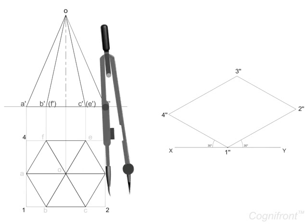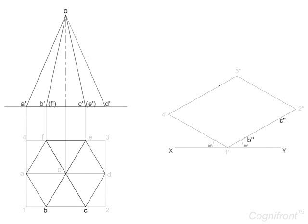After that, locate points B'', C'', E'', F'' by measuring the lengths of the sides of the hexagon.